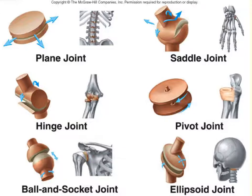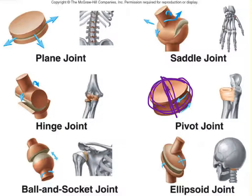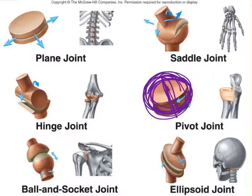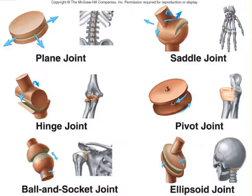Next is the pivot joint. You have a ring bone with a taller bone in the middle, and the movement is rotational or spinning — that is the pivot joint. You'll find it at the proximal radioulnar joint, between the radius and the ulna (closer to the elbow), and between the atlas and axis joint, which is your C1 and C2 vertebrae. Note that the pivot joint also has only one plane of movement: twisting.